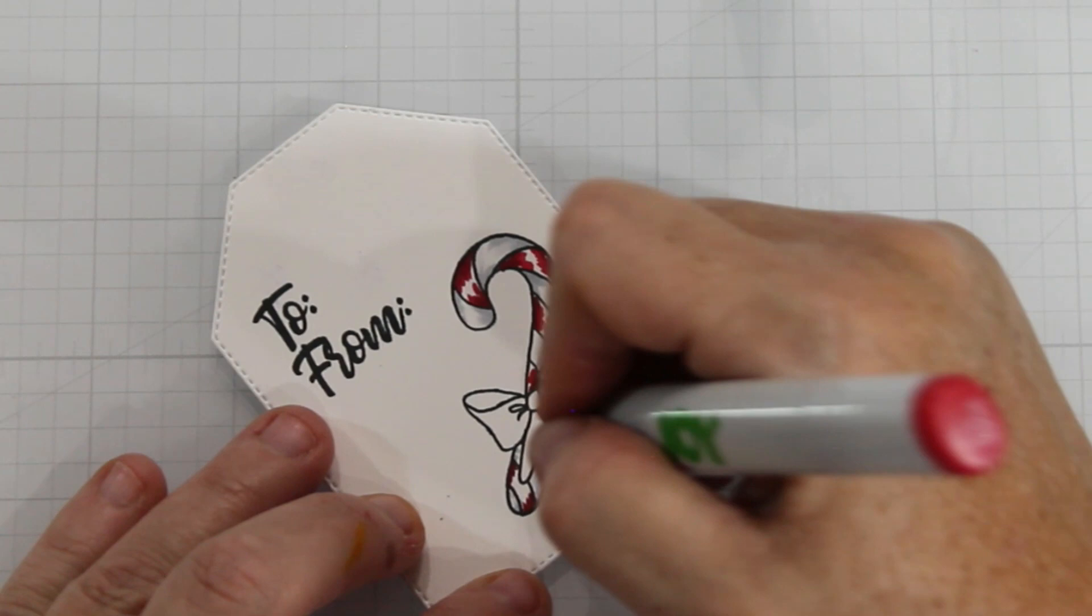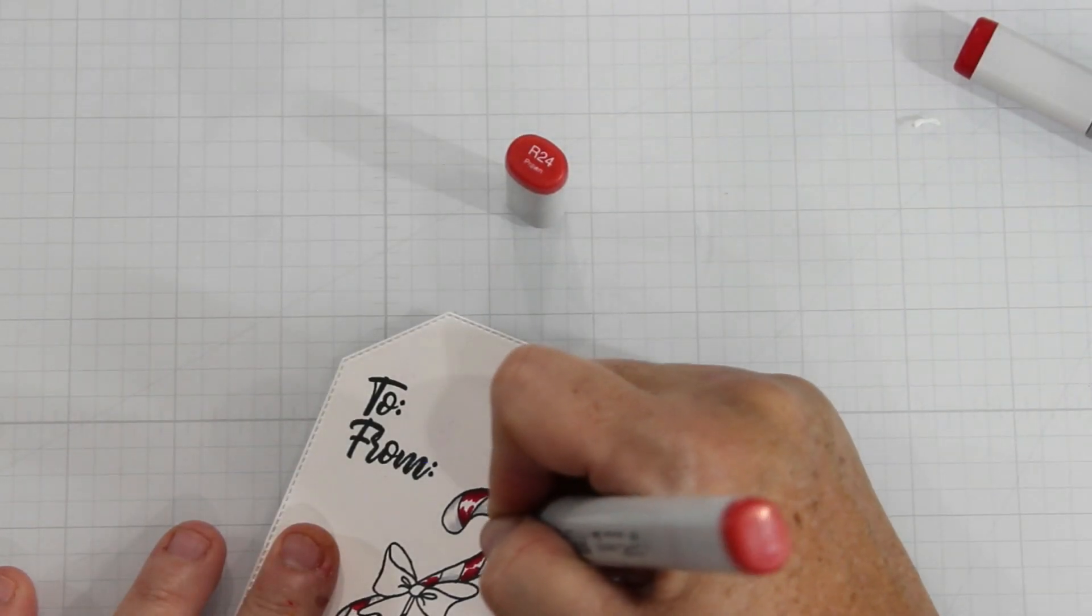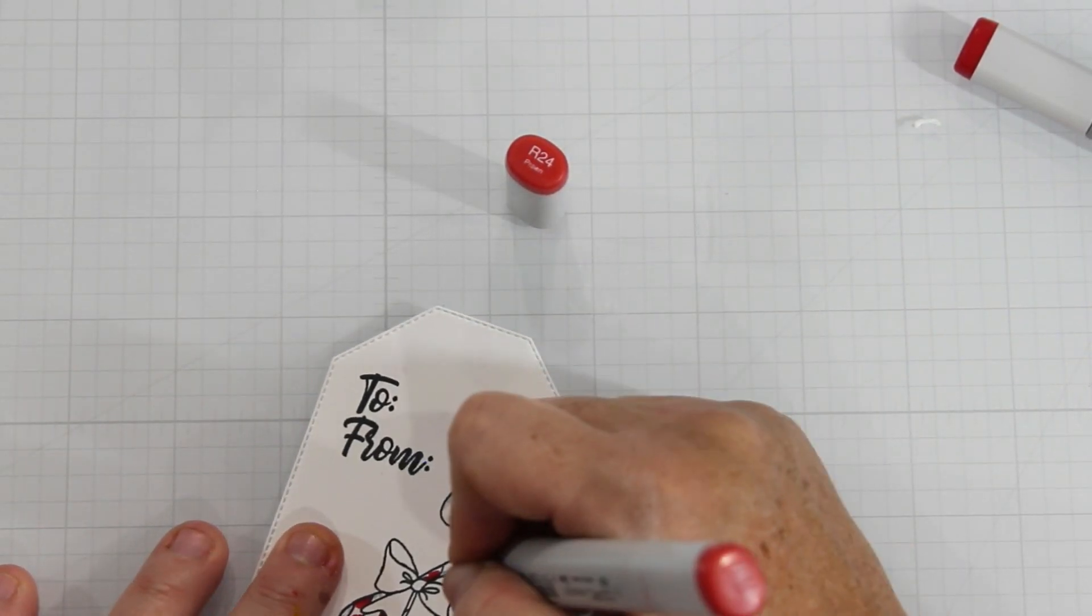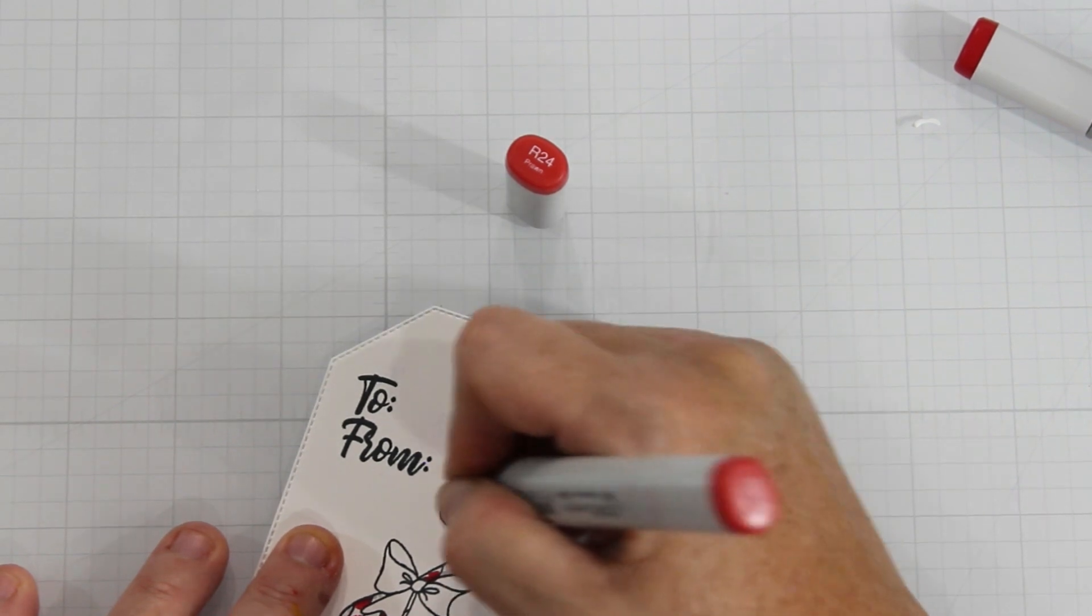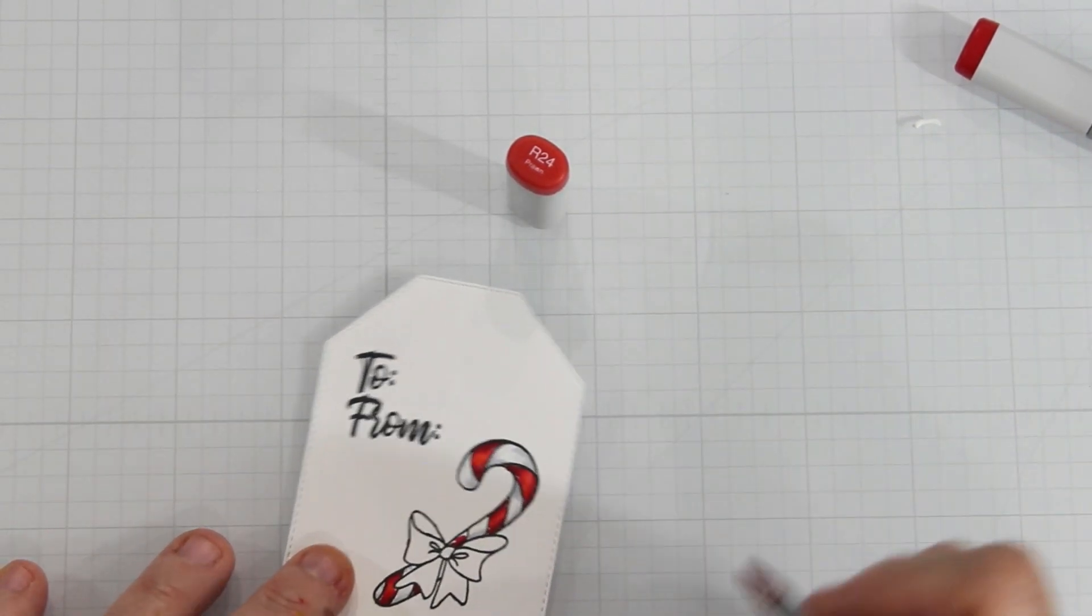I opted not to leave any white space because I wanted a really shiny but vibrant red in my candy cane but again if you want to leave that white space you can or you can use a gel pen or like I use a Posca pen to put in my details.